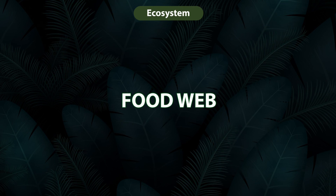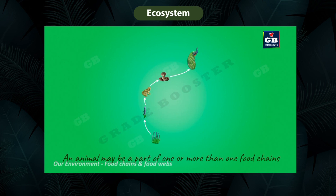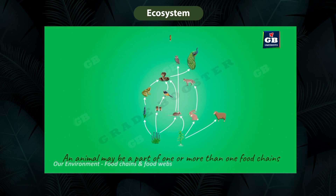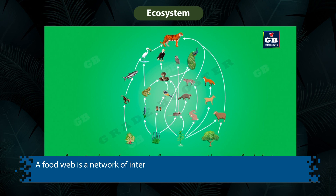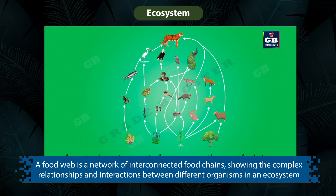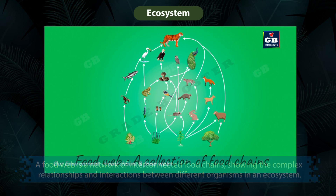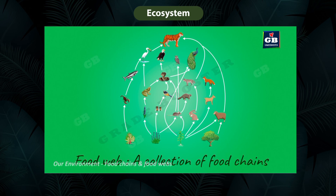Sometimes one animal found in one food chain of an ecosystem can also be part of another food chain. In an ecosystem, many food chains may be linked with one another. When we present all these food chains in a graphical form, it is called a food web — a network of interconnected food chains showing the complex relationships and interactions between different organisms in an ecosystem.